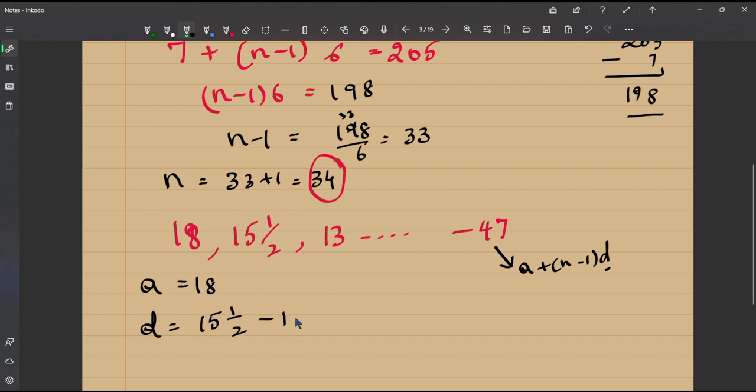This is a decreasing arithmetic progression, so our common difference is going to be negative. What is 18 minus 15 and a half? 2 and a half. It is minus 2 and a half or we can also rewrite it as an improper fraction, minus 5 by 2. 2 is 4, 4 plus 1 is 5, minus 5 by 2.